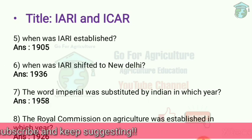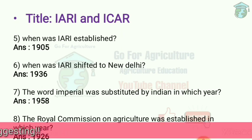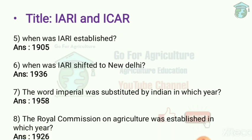When was IARI established? In 1905 at Pusa, Bihar. When was IARI shifted to New Delhi? In 1936, because in 1934 an earthquake occurred and the buildings were damaged.